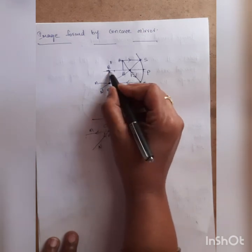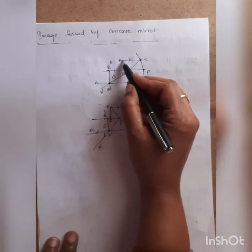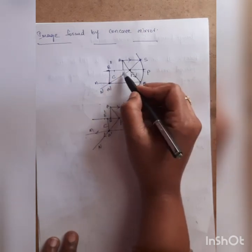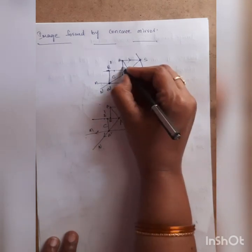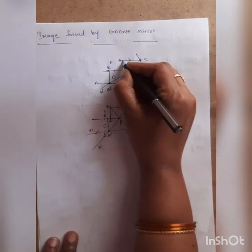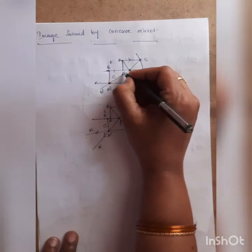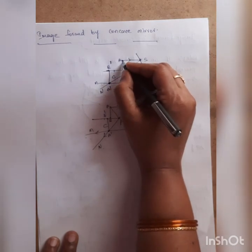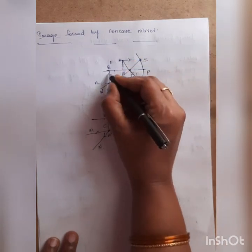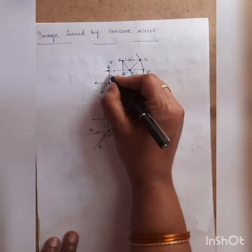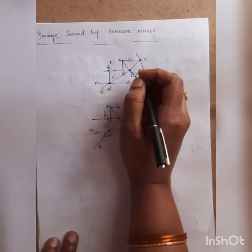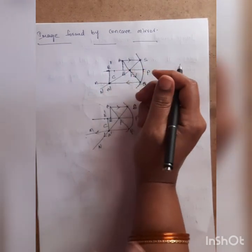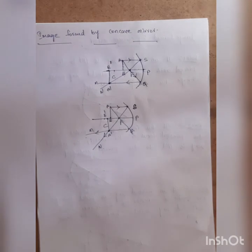A dash B dash is the image of object AB. Any remaining points between A and B will have their images formed between A dash and B dash. This is about the image formed by the concave mirror. Thank you, see you.